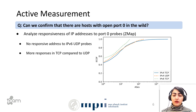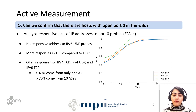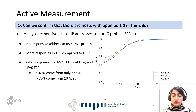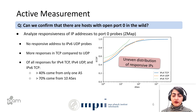This plot shows the distribution of the number of ASes containing responsive IP addresses to port 0 probes. The Y axis shows the ECDF and the X axis shows number of ASes. More than 40% of responses come from only one AS, and more than 70% come from just 10 ASes. So there are open port 0s in the wild, but they are not evenly distributed, which may indicate that some networks filter out port 0 traffic.